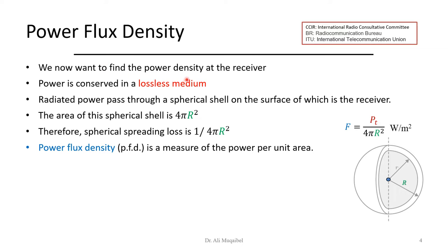We want to find the power density at the receiver. P_T is at the transmitter, so we want to know how much power is received. We need to go through what's called the flux density, which is power relative to area, because the receiver antenna size will determine how much power we receive. The flux is measured in watts per meter squared.